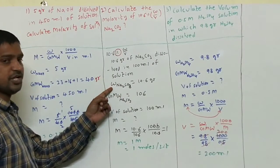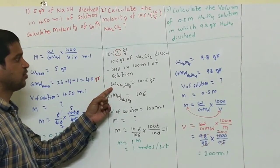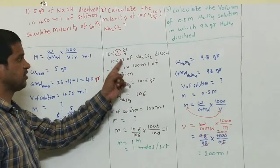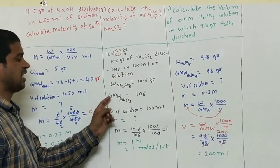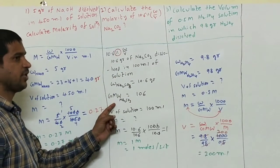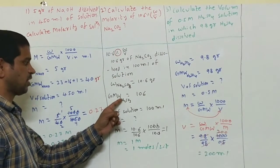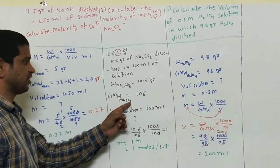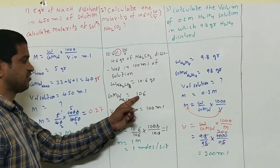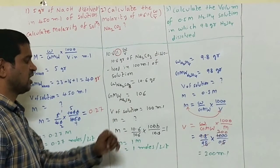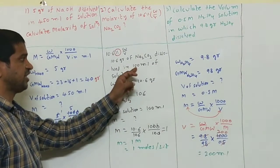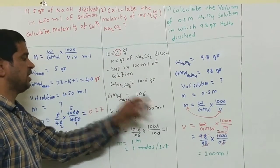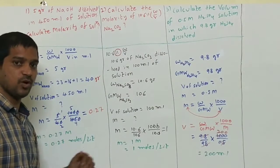I am writing all the values. The weight of Na₂CO₃ from the question is 10.6 grams. The gram molecular weight as per formula for Na₂CO₃ is 106. The volume of the solution from here is 100 ml.